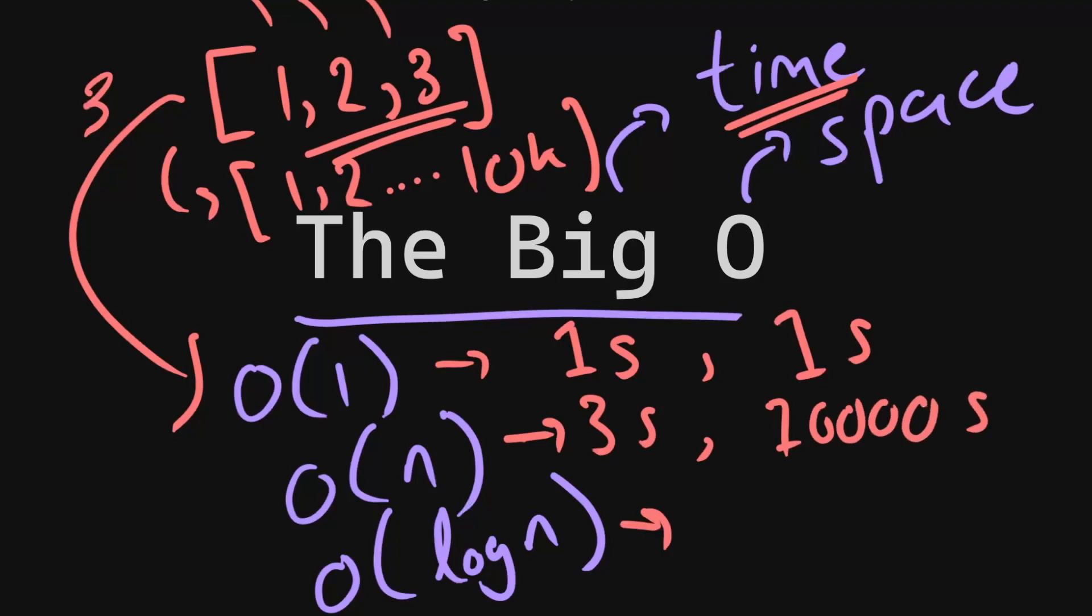For log n, it will be a little bit different. Let's say it takes about 1 second for the 3 element situation. This would take somewhere around 13 to 14 seconds, like 13.2 I think it is, because we take log base 2 of 10,000.